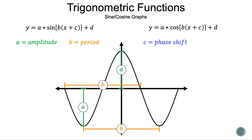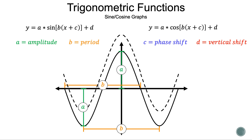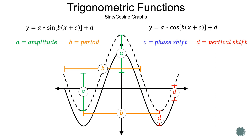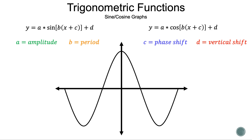Now let's talk about the last number, which is D, or the vertical shift. The vertical shift is how far the function moves up or down. The best bet to find the distance of the vertical shift is at one extrema to another, but it can be found somewhere else as well. That means the amplitude and the period also shift. And that is how the different numbers affect the graph of any sine or cosine function.